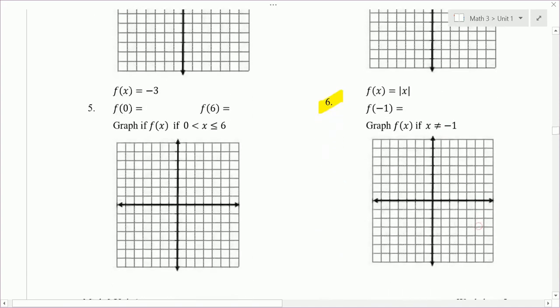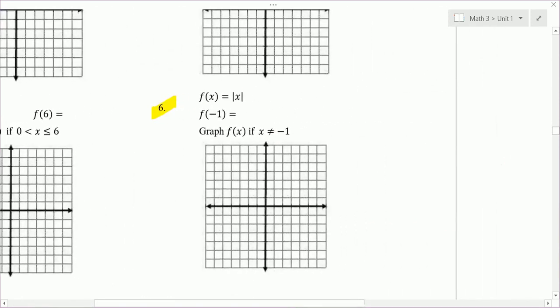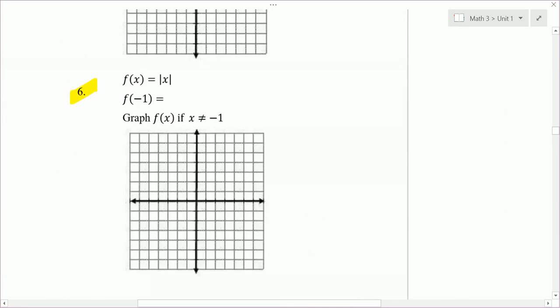Let's take a look at number 6. Six is also a parent graph, the linear absolute value, you get that V shape. If I plug in negative 1 into that, I get the absolute value of negative 1, which is 1, which tells us that this goes through the point negative 1, 1.